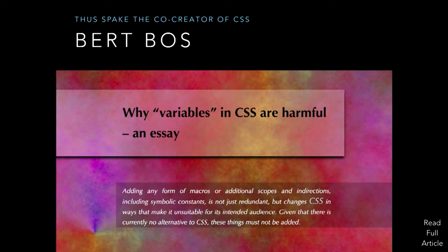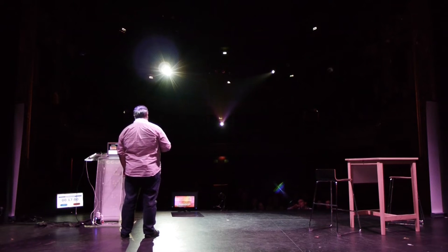When I first got into developing on Sass, I bumped into this article by Bert Bos, who's co-creator of CSS, and he wrote an essay on why variables in CSS are harmful. If you ever want to write an article about something being harmful, maybe don't. But in here he says: adding any form of macros or additional scopes or indirections, including symbolic constants, is not just redundant, but changes CSS in ways that make it unsuitable for its intended audience. Given that there is currently no alternative to CSS, these things must not be added.